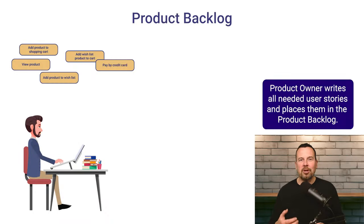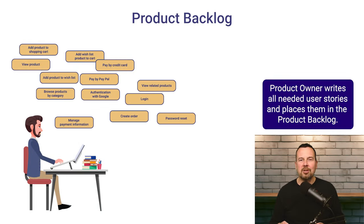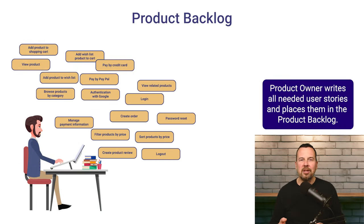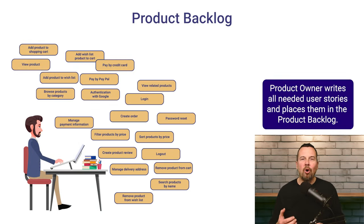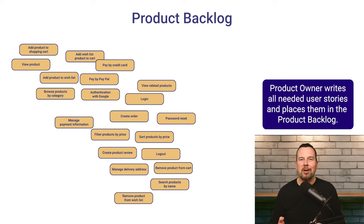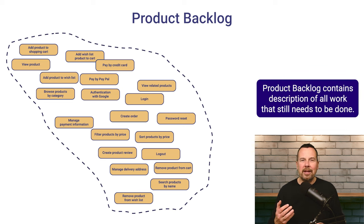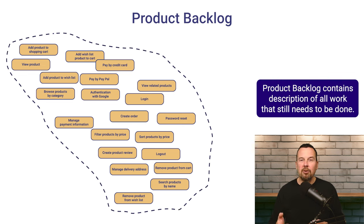The product owner will then write as many stories as needed, and all of them will be placed in the product backlog. Product backlog is a Scrum term, and it represents a place that contains a description of all work that still needs to be done and has not started yet.